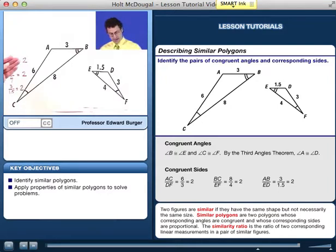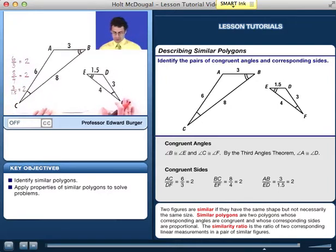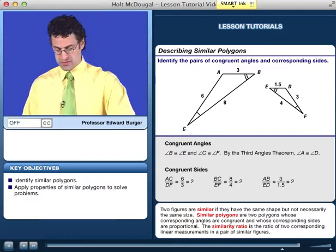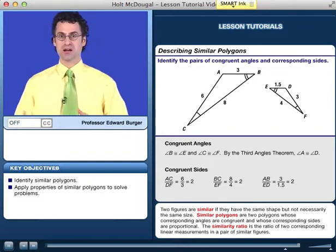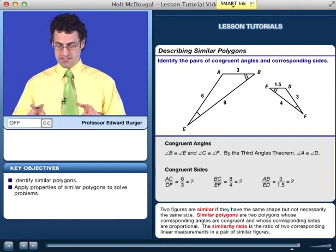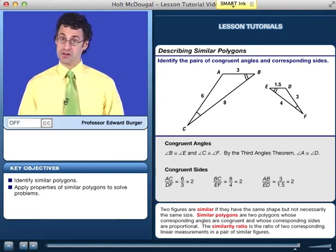So notice that in each case, the ratio of corresponding side lengths of these two similar triangles, the ratios all agree. And that's not a coincidence. That's a fact. If we have similar objects, then the ratio of the corresponding parts will all be the same. Pretty cool. Similar objects and ratios, they're all interconnected.